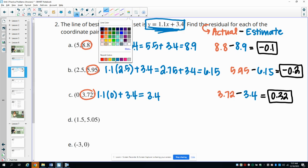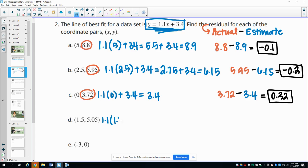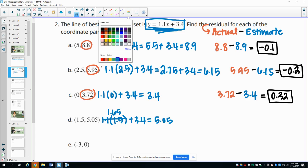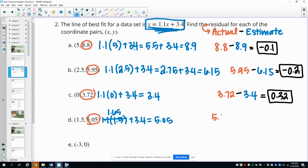Part D, we'll plug in 1.5. So 1.1 times 1.5 plus 3.4 gives us 1.65 plus 3.4, which equals 5.05. Then we'll take our actual 5.05 and subtract off our estimate, which was also 5.05, so that gives us our residual as 0.